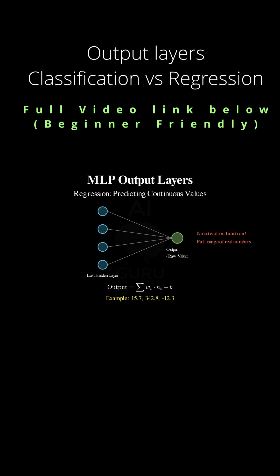You just output the raw number? You output the raw number. If you want to predict 15.7, you output 15.7. Right, because if you used a sigmoid or a tanh function, it would just squash that value between 0 and 1, or minus 1 and 1, which you definitely don't want. Exactly. The network needs the full range of real numbers.